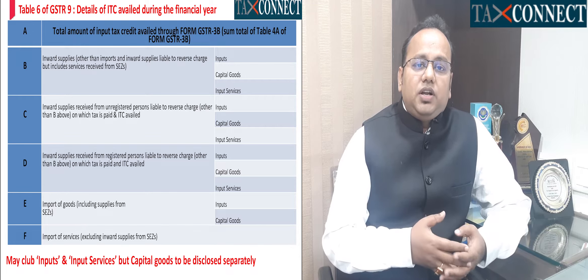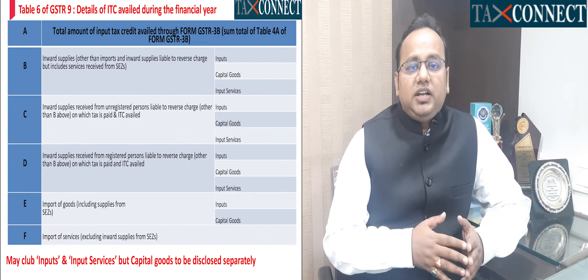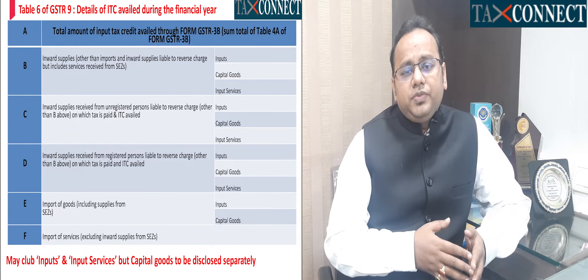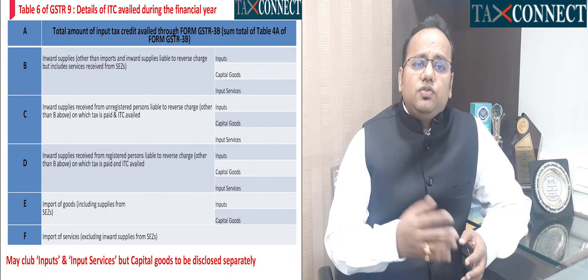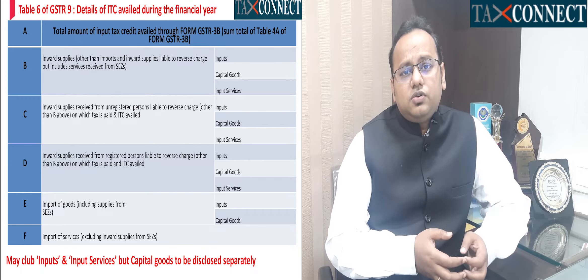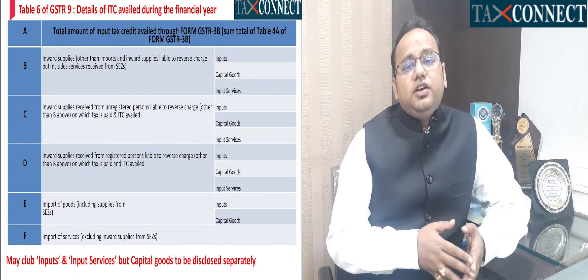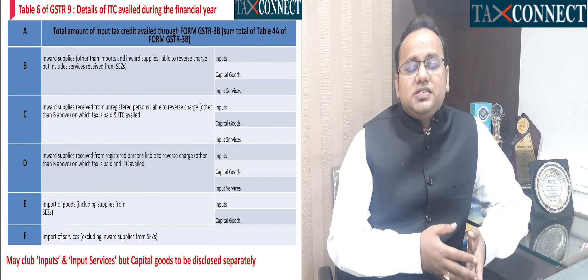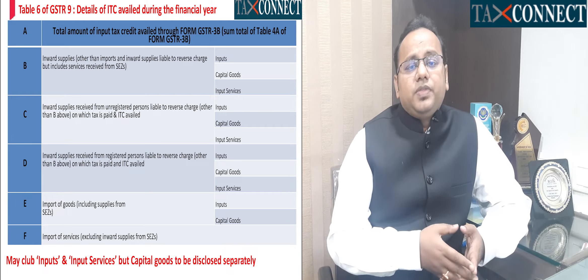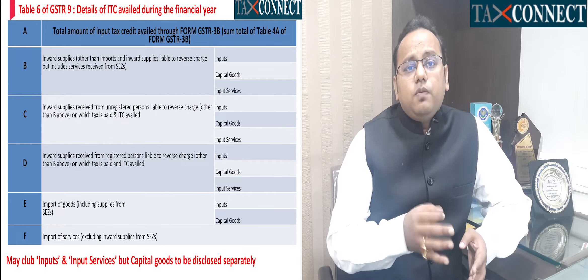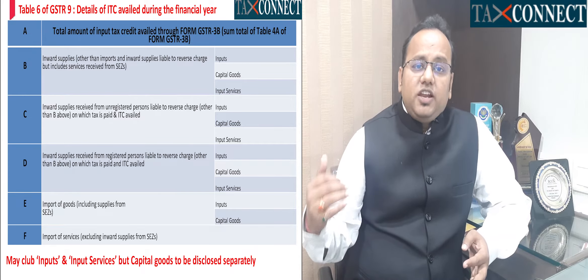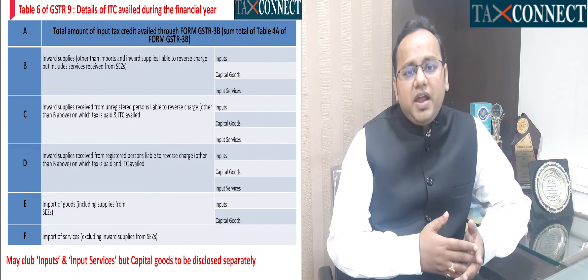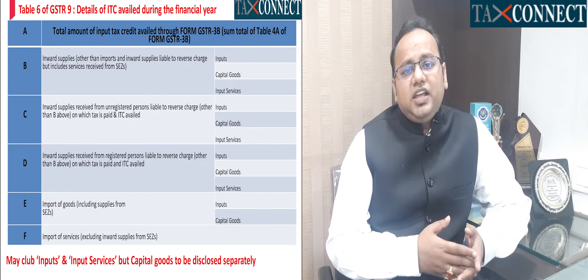It is very important to have HSN code details. Although in 19-20 it is still optional for table 17, you would see that in refund rules it is now important and mandatory to provide HSN code details. Our suggestion is for table number 6 also: bifurcate into inputs, input services and capital goods — all three — even though it is not mandatory and you can club inputs and input services.